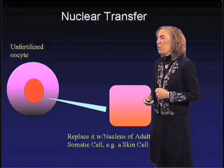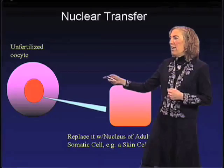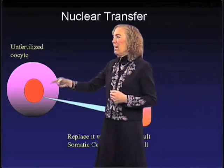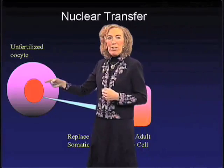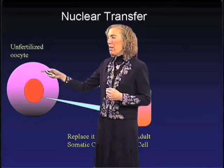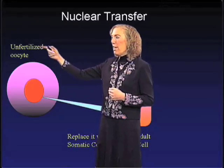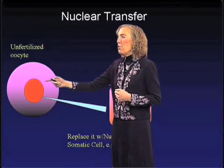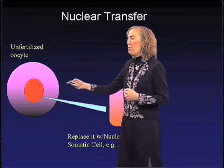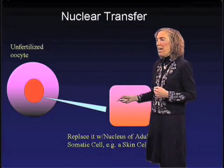So what do we do next? We have now generated a hybrid cell. The cytoplasm of the cell comes from the unfertilized oocyte, while the nucleus of this cell now comes from an adult somatic cell.